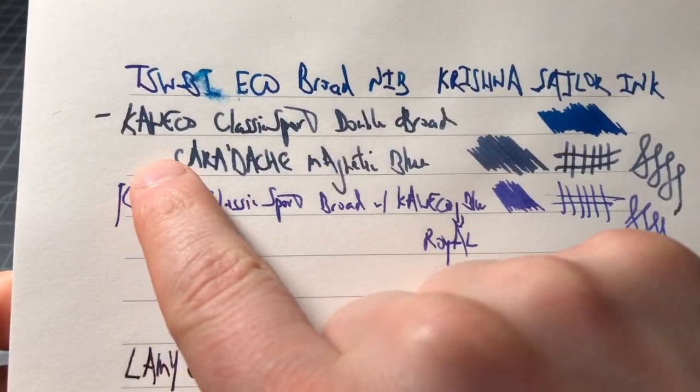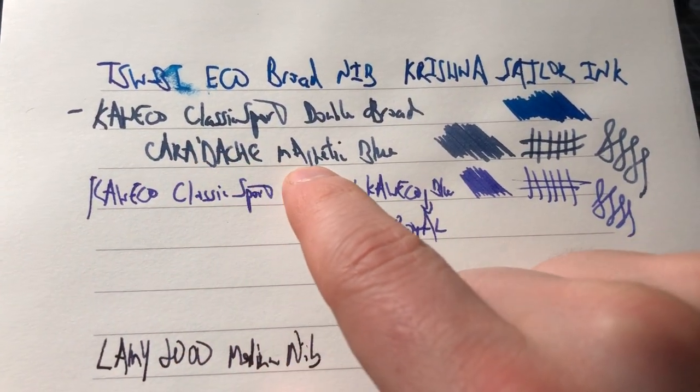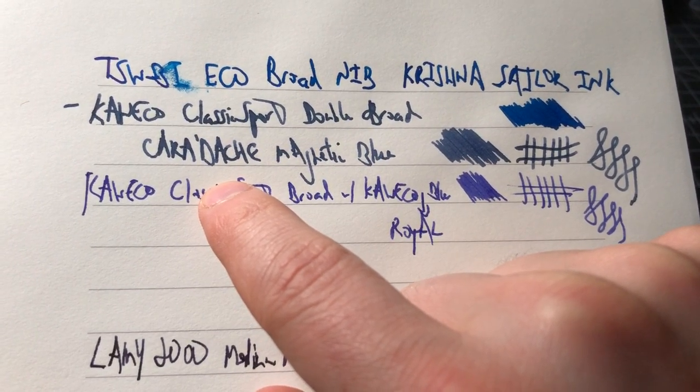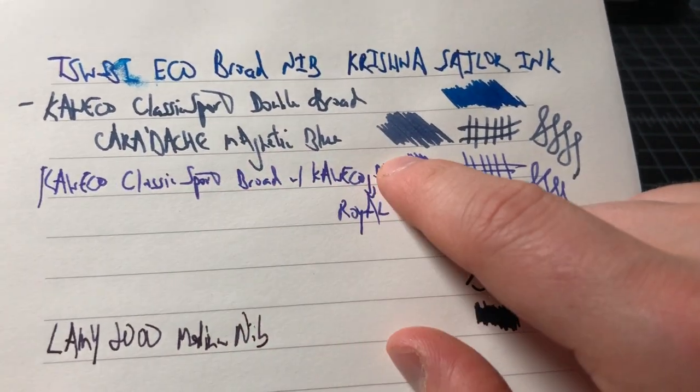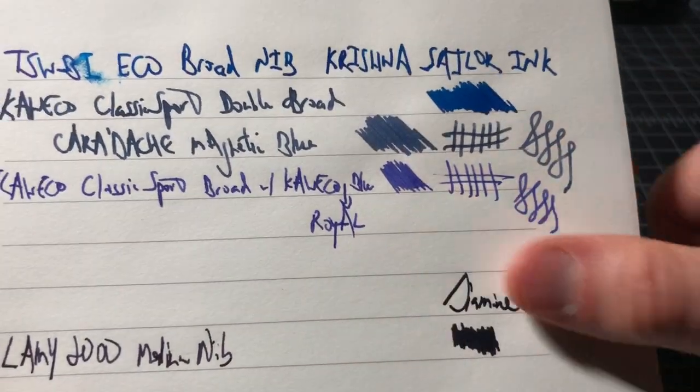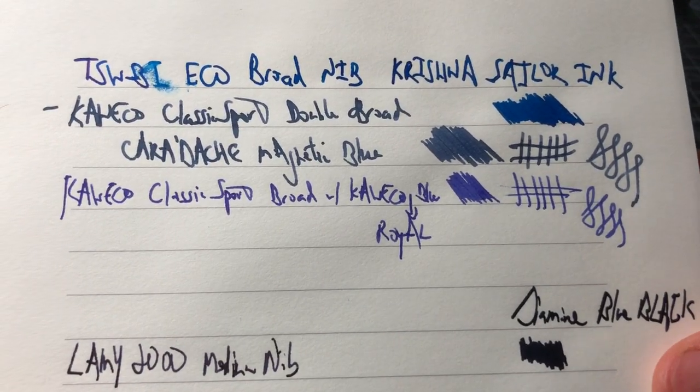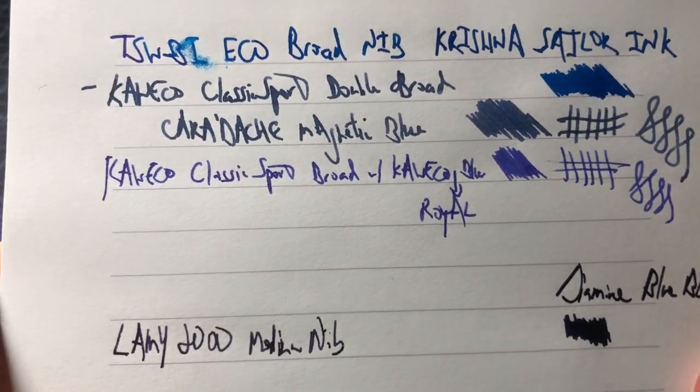Here we have the Kaweco Classic Sport Double Broad. So that's what I'm using right now with that Caran d'Ache Magnetic Blue. Nice thick lines. It's a generous double broad. Kind of what I would want from a double broad.